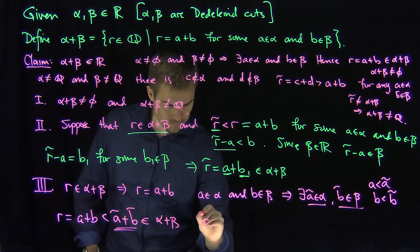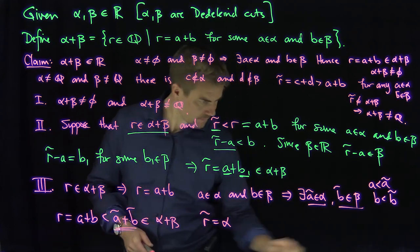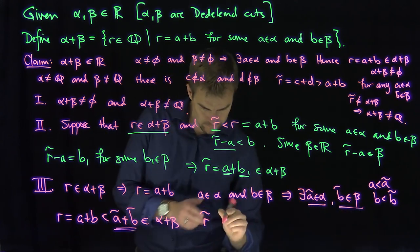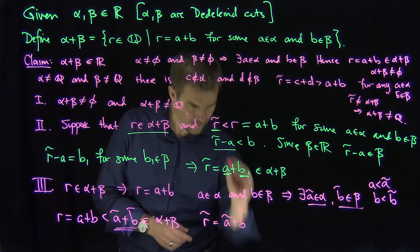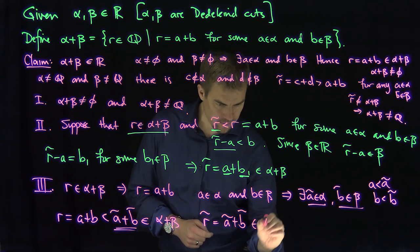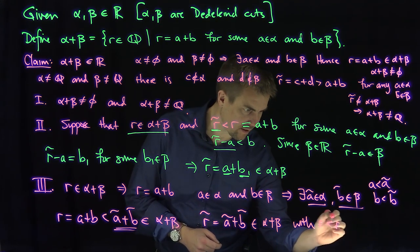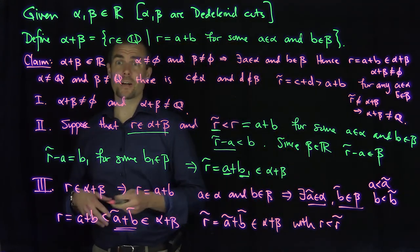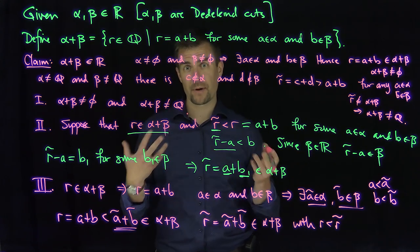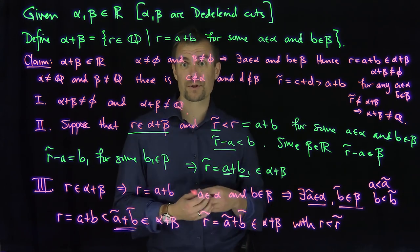So we have r equals a plus b, which is strictly less than a-tilde plus b-tilde. Since a-tilde is in alpha and b-tilde is in beta, a-tilde plus b-tilde is an element of alpha plus beta. I define r-tilde to be a-tilde plus b-tilde, and this r-tilde is in alpha plus beta with r less than r-tilde. That's property three of Dedekind cuts. So we've shown that the sum of two Dedekind cuts alpha plus beta, where alpha and beta are Dedekind cuts, is itself again a Dedekind cut. So addition is a closed operation on the set of real numbers.